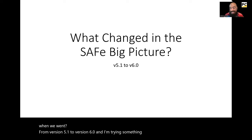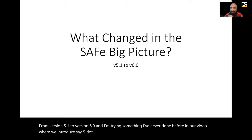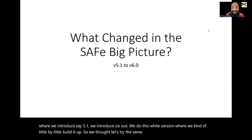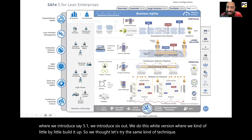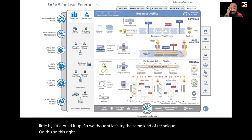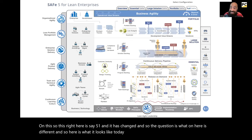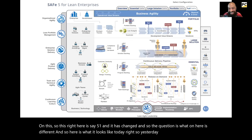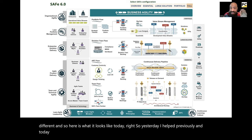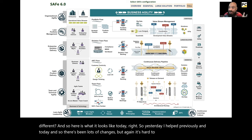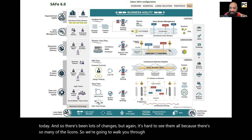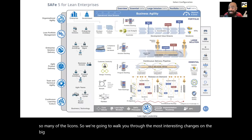I'm trying something I've never done before. In our video where we introduce SAFe 5.1 and 6.0, we do this white version where we kind of little by little build it up. So we thought, let's try the same kind of technique on this. So this right here is SAFe 5.1, and it has changed. So the question is, what on here is different? And here is what it looks like today — previously, and today. There's been lots of changes, but it's hard to see them all because there are so many little icons.